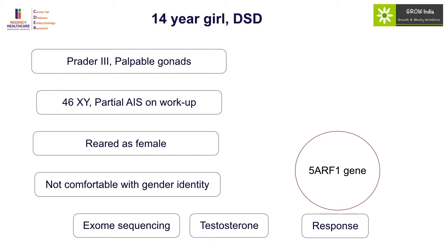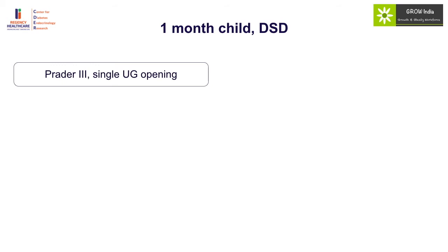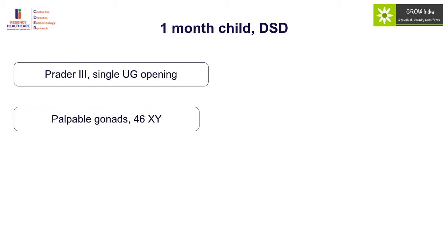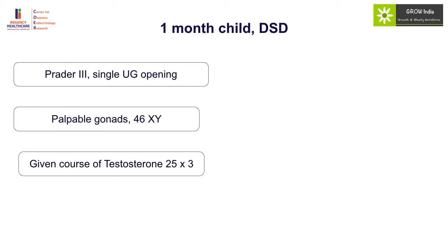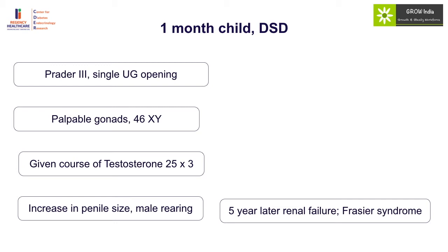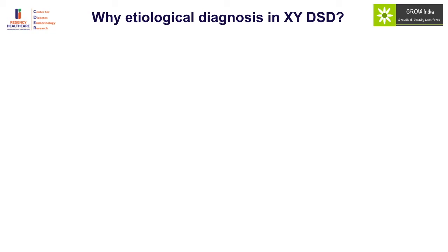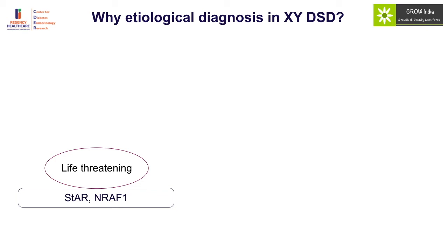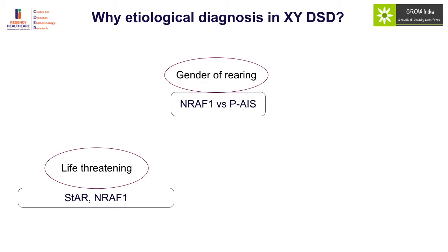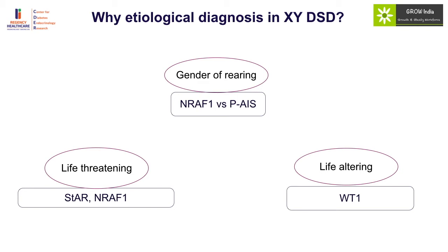A one-month-old child presented with Prader stage 3, single urogenital opening, palpable gonads and XY karyotype, diagnosed as XY DSD. A course of testosterone — three doses — produced some increase in penile size and male gender of rearing was advised. But five years later the child presented with renal failure and was diagnosed with Frazier syndrome. Etiological diagnosis is extremely important because this could be a life-threatening situation like STAR defect or SF1 defect, or have significant gender of rearing implications, or be a life-altering disease associated with WT1 as we saw in Frazier syndrome.